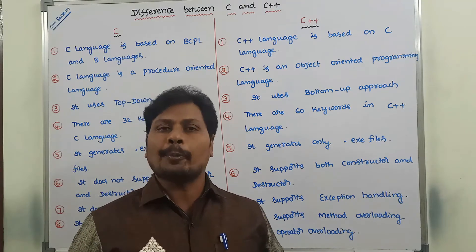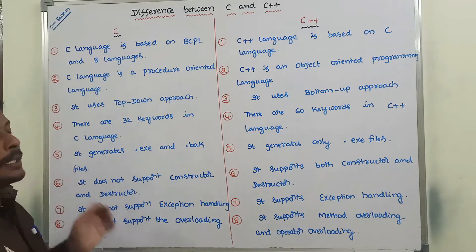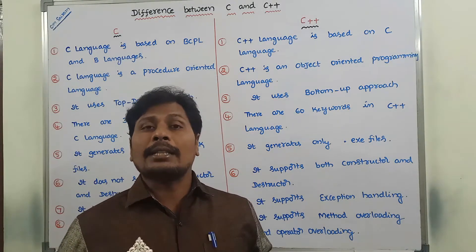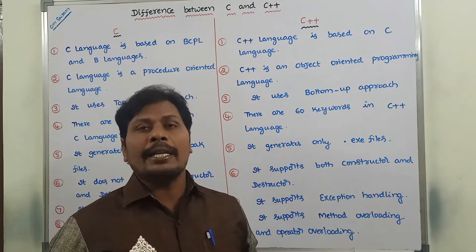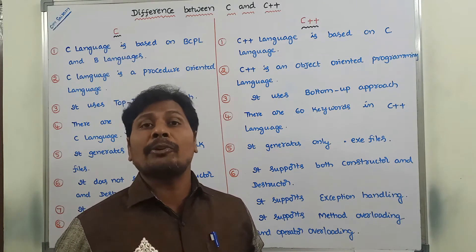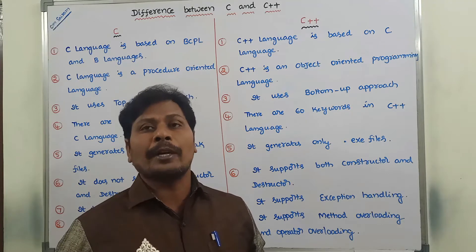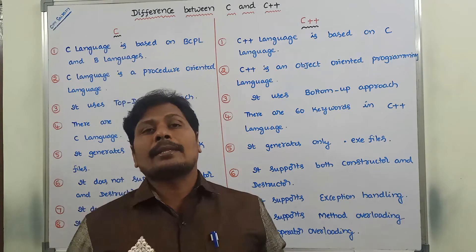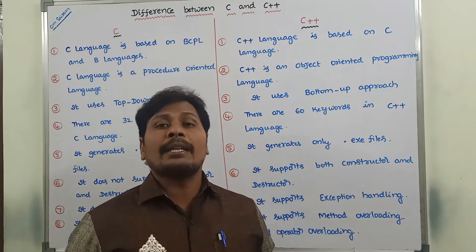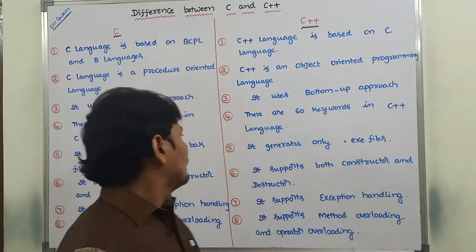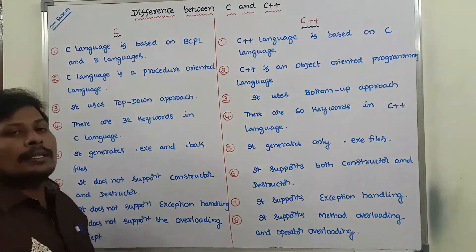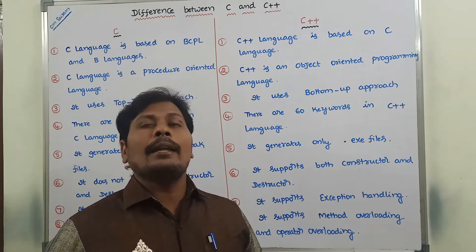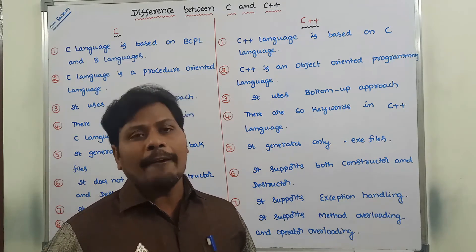The fourth point: C language contains only 32 keywords. A keyword is a special reserved word that is used for a particular purpose. In the case of C++, it contains approximately 60 keywords. The fifth point: C language generates .exe files and .bak files, whereas C++ language generates only executable files, that is .exe files.